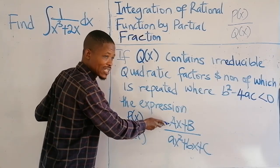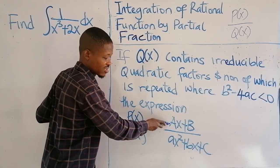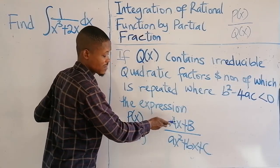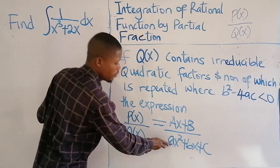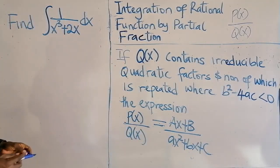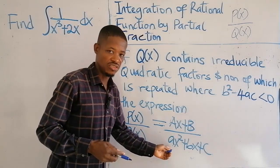the rational functions will equal to this expression, will equal to a linear factor. Your A is a constant, your B is a constant, will equal to a linear factor at the numerator over the quadratic expression,